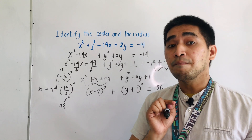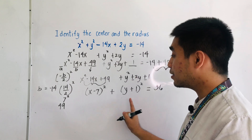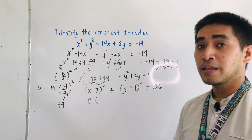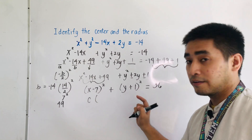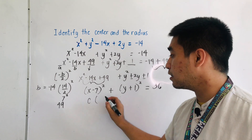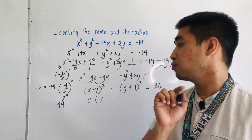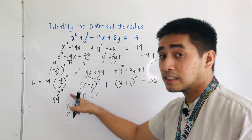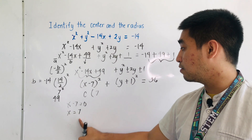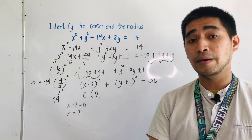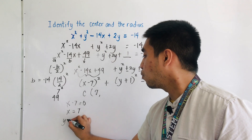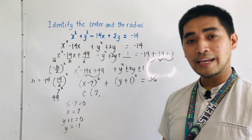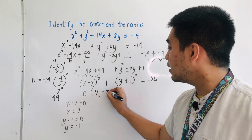We are asked to identify the center and the radius of the circle. This is now the standard equation of the circle, or the center-radius form. To identify the center, we look at the coordinates. If this is x minus 7, then setting x minus 7 equal to 0 gives x equal to positive 7. For the y coordinate, y plus 1 equal to 0 gives y equal to negative 1. Therefore, the center is located at positive 7 and negative 1.